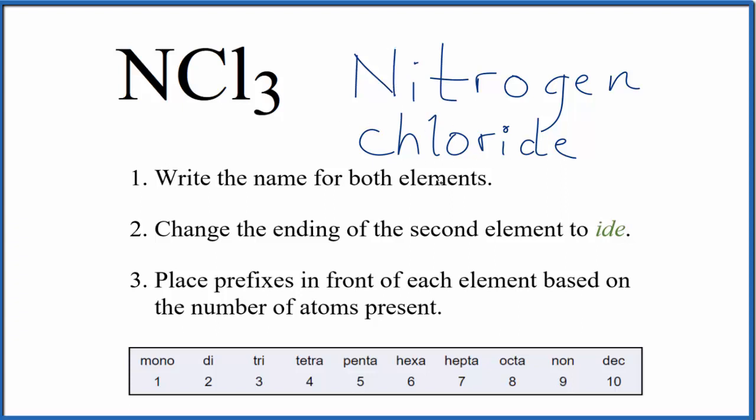For the chloride here, from our chlorine, we have three of these. We're going to put 'tri' in front of the chloride. So the name for NCl₃ is nitrogen trichloride.